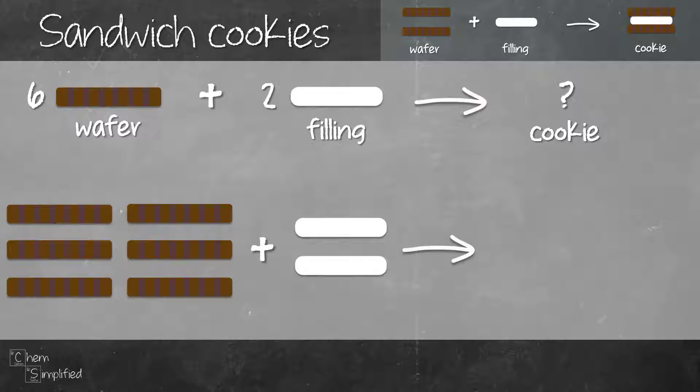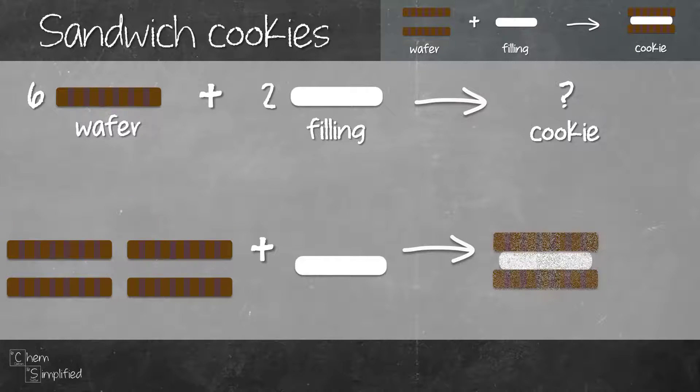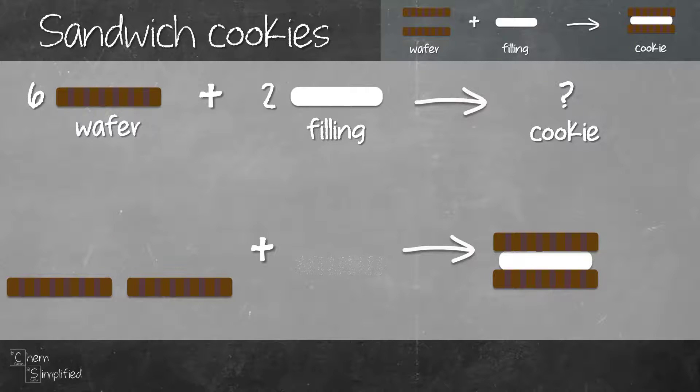For every two pieces of wafer and one piece of filling, we get one cookie. Looks like we still have enough ingredient to make another cookie. So let's combine the two wafers and the remaining filling and that's gonna give us another cookie.